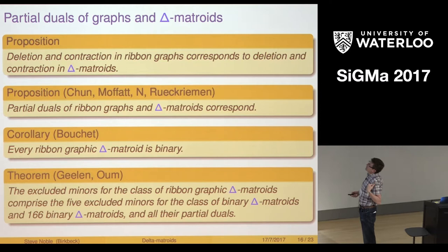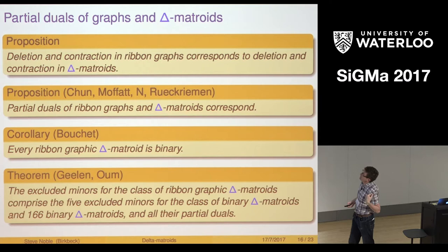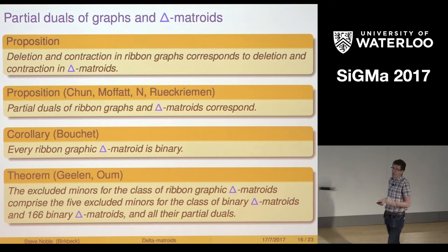Corollary of Boucher's result: every ribbon graphic delta matroid is binary. Then there's this really nice result of Guillen and Hume finding the excluded minors for the class of ribbon graphic delta matroids.